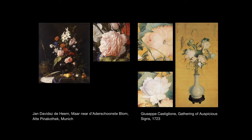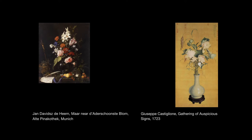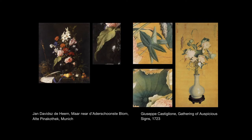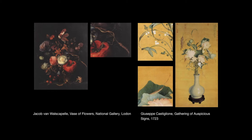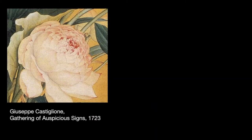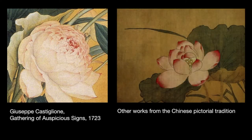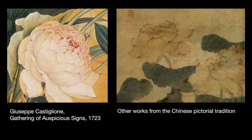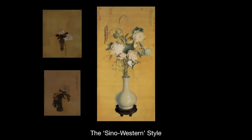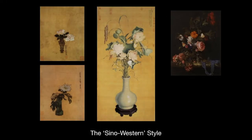Castiglione applied chiaroscuro and tonal perspective as seen in many European still-life paintings to depict the auspicious plants. We can see how he created the illusion of volume through light and shadows and portrayed them in a realistic way, similarly to what we see in Dutch still-life paintings. However, he avoided the relatively dark parts of shadows, as strong shadow expression was not welcomed by audiences in China. He consciously adopted sound skills from the Chinese tradition, and the Sino-Western style became a new type of artistic language.